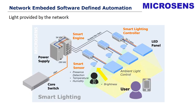Here we have a sample for a smart lighting concept. We have a core network connected with the local smart engine providing PoE power supply. We have our smart light controller, which includes a sensor and LEDs. Up to this point, everything runs over the network. The power supply for each LED and the sensor are provided here. With the smart sensor, we cover presence detection, temperature, humidity, and brightness. This is a typical sample for PoE-fed lighting directly out of the network.